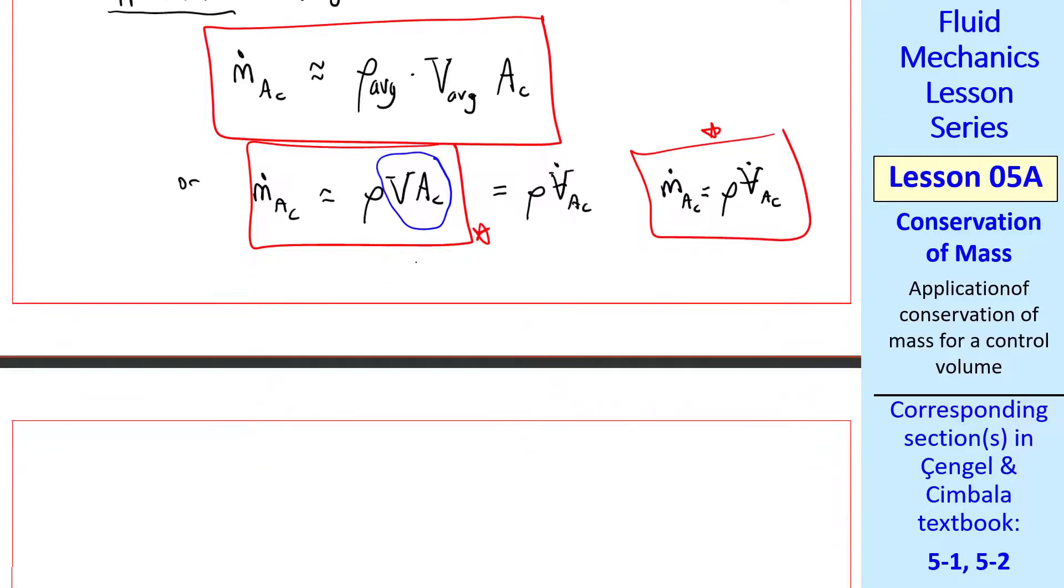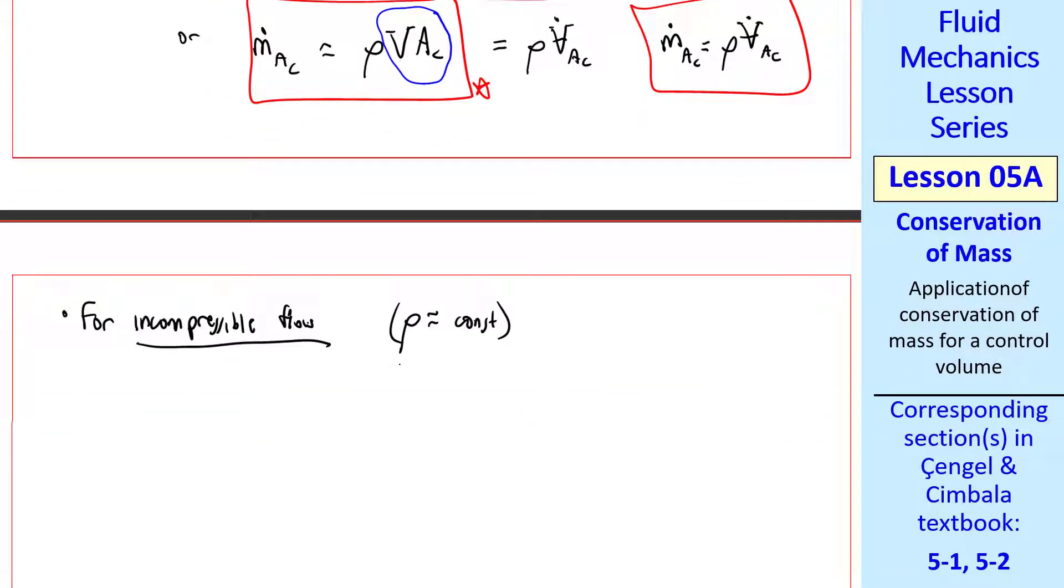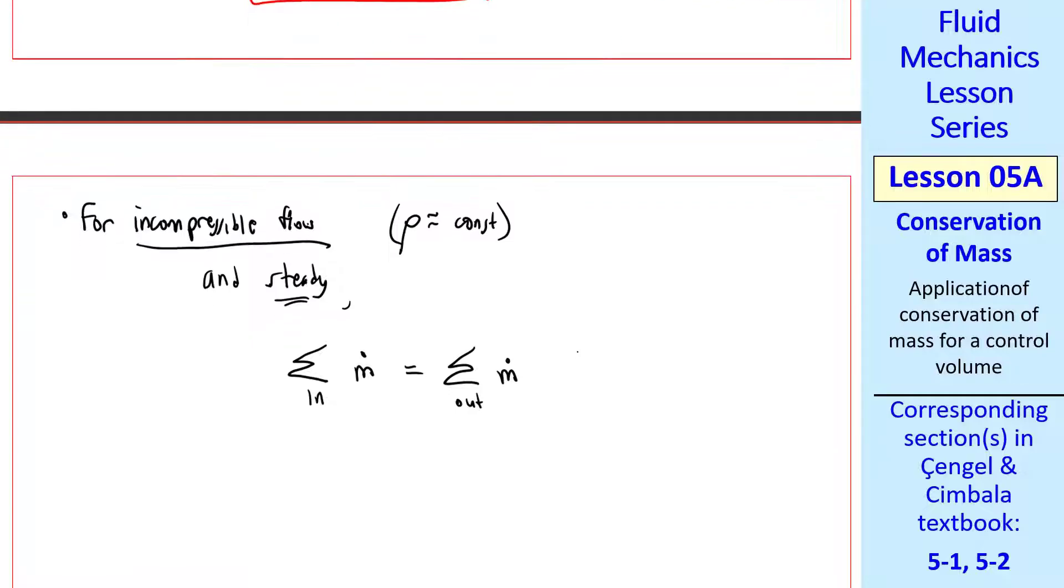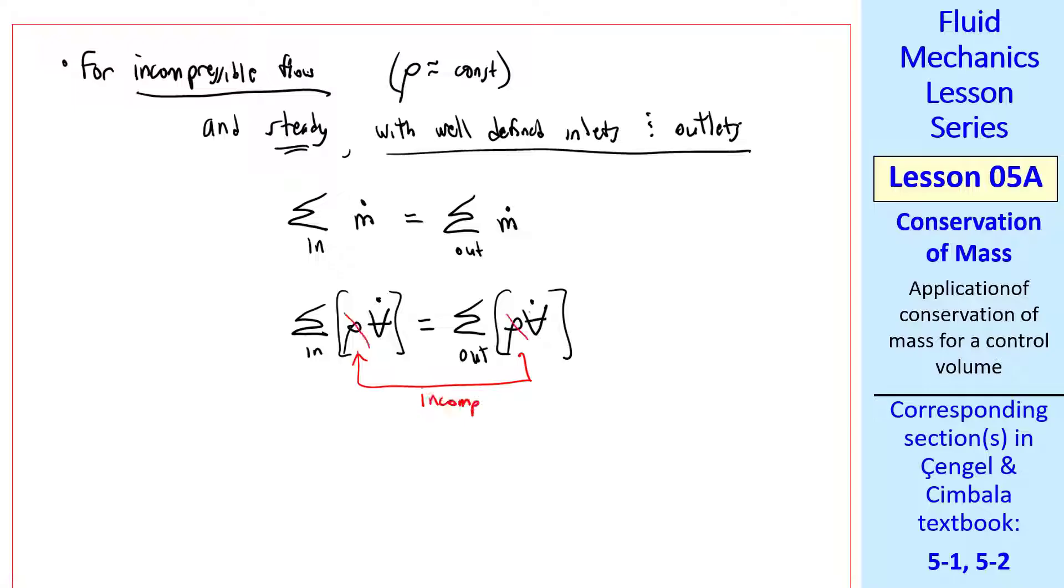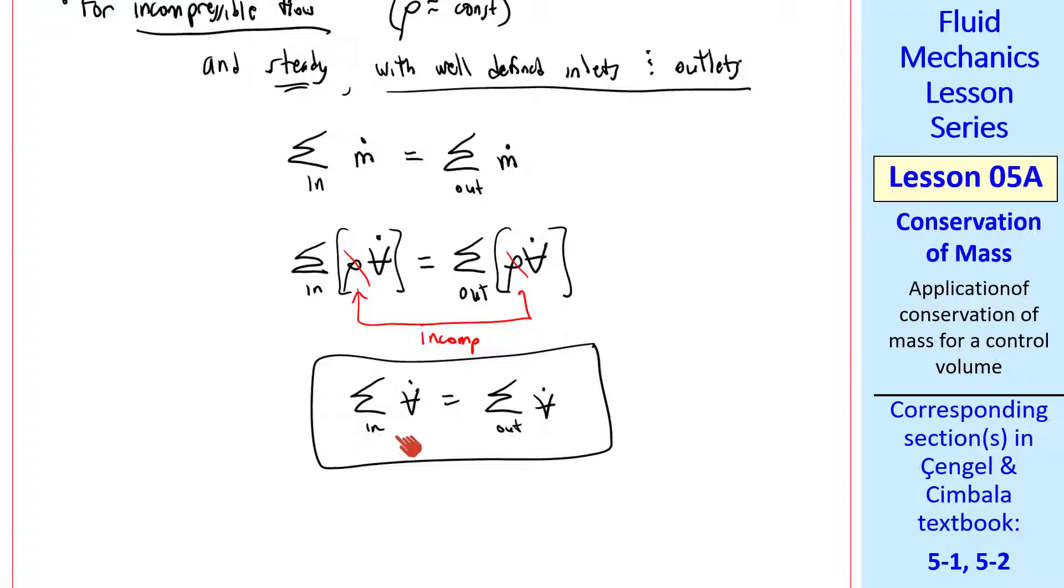Finally we can simplify further if the flow is incompressible. In other words, rho is approximately constant and steady. Our simplified steady conservation of mass equation for our control volume with well defined inlets and outlets reduced to this equation. We can write m dot as rho v dot. But if the flow is incompressible, the densities cancel. And therefore sigma in v dot equals sigma out v dot. In other words, the net rate of volume flow in must equal the net rate of volume flow out. Fluid can't accumulate inside the control volume because it's incompressible and we have a fixed control volume with some inlets and some outlets. So again whatever comes in must go out. This is in terms of both volume flow rate and mass flow rate.